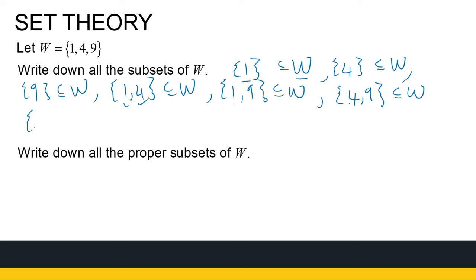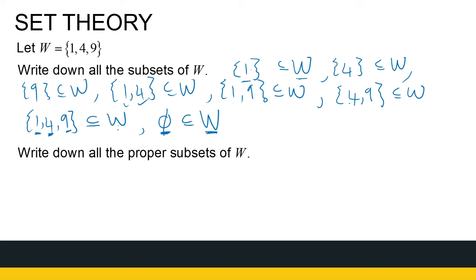Now there are two very special subsets that we might miss. Firstly, the set with 1, 4, and 9 — meaning the whole of W — is also a subset of W. Because the definition of subset says the first set is a subset of the second if every element in the first is also in the second. One is in W, four is in W, and nine is in W. So every set is a subset of itself. And with creative thinking: the empty set is a subset of any set. Can you show me an element of the empty set that is not in W? You cannot find one, so the empty set is a subset of W.